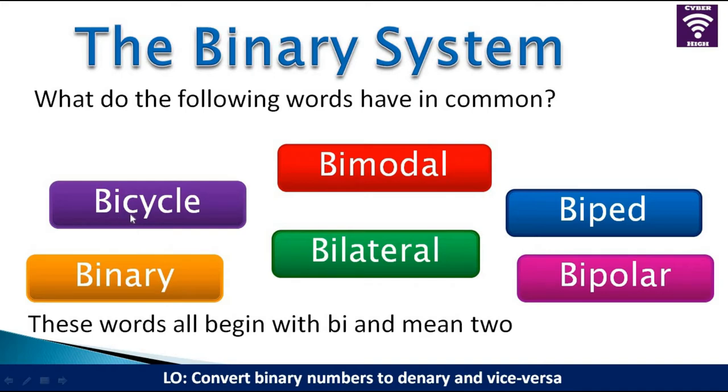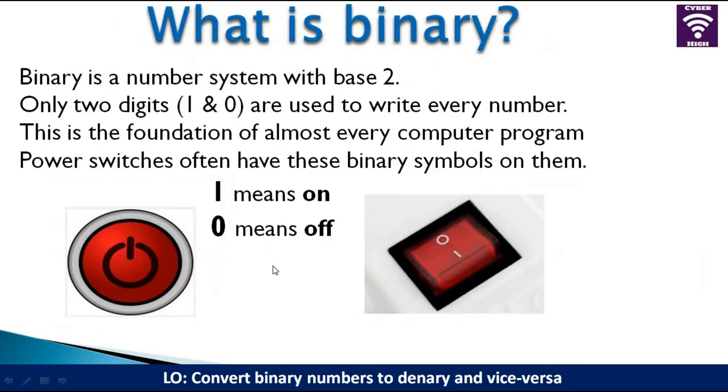Bicycle, two wheels. Bilateral, two parties involved. Bimodal. So binary system is a number system that is on base 2. So when we are looking at numbers, and these numbers are in base 2, we call such numbers binary. So only two digits are used, 1 and 0. When it is 1, it simply means on. And when it is 0, it's off.